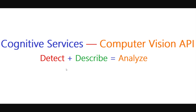Hi everyone, welcome back. In the last video we were talking about how to extract text from an image using the Computer Vision API. In this video we will be discussing how to detect objects from an image, describe what is there in the image, or analyze the image from an overall view — whatever objects are available.